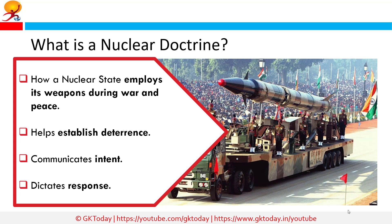A nuclear doctrine states how a nuclear weapon state would employ its nuclear weapons both during peace and war — how it uses its weapons in times of peace and times of war. This doctrine helps to establish a deterrence via adversary. Through the nuclear doctrine, a state can communicate its intention and resolve to the enemy, telling the world whether it is willing to use its weapons first or only in retaliation. The doctrine also guides the state's response during war.